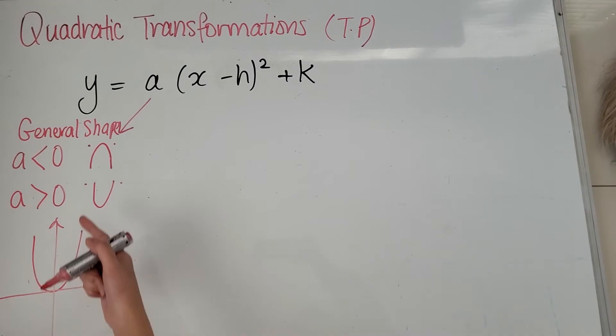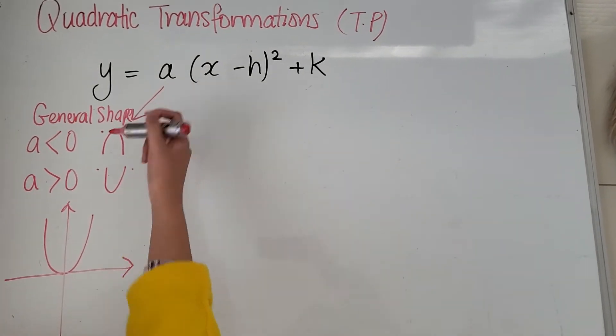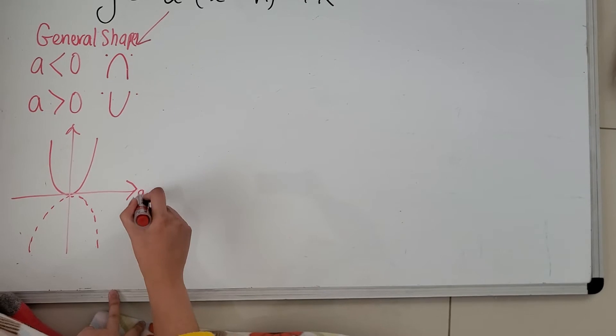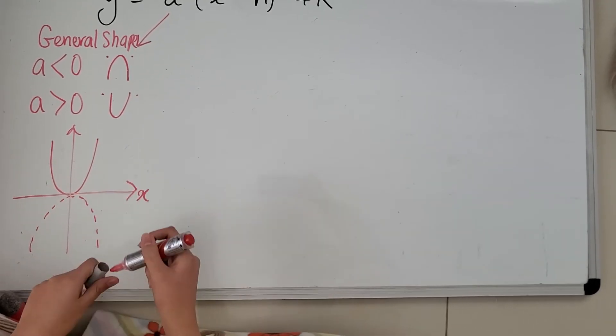But if there is a negative a in front of your brackets, then it will reflect along the X axis. So it will be a sad face from there.